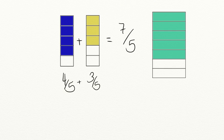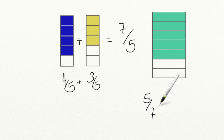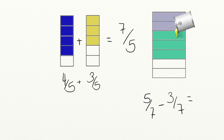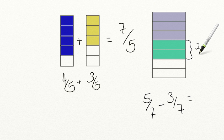Let's try another practice problem together. We have a fraction bar on the screen with five-sevenths shaded in, and I want you to subtract three-sevenths from this fraction bar. If we have five-sevenths shaded in and we take away three-sevenths, we cross out one-seventh, two-sevenths, three-sevenths. That leaves us with two-sevenths — one, two-sevenths left over.